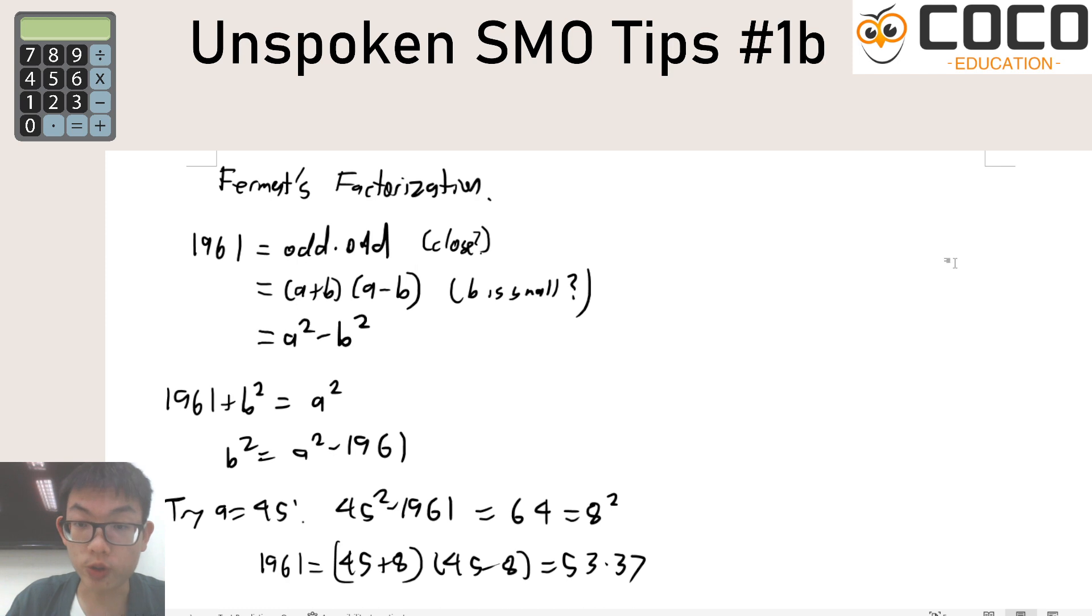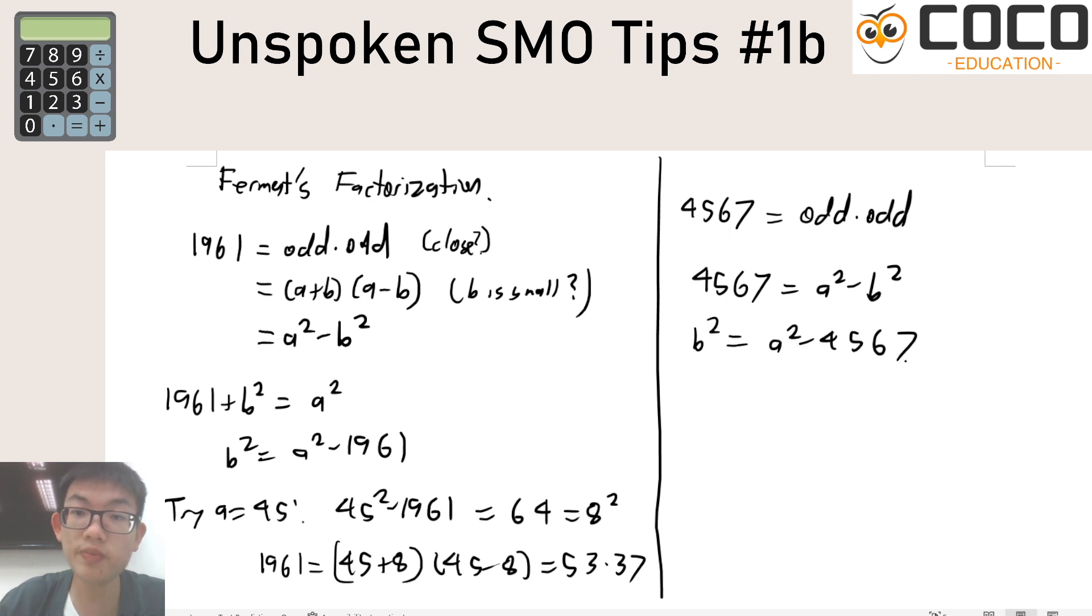But we can actually also use the same idea if we want to factorize other numbers or if we want to show that a number cannot be factorized and that would be what we can do for 4567. So in the same vein if it can be factorized into odd times odd, 4567 should be equal to some a squared minus b squared which means that a squared minus 4567 should be a square.